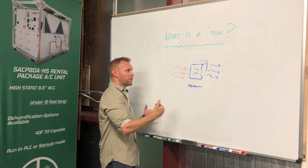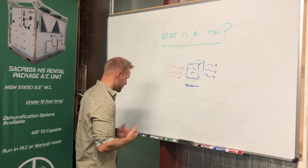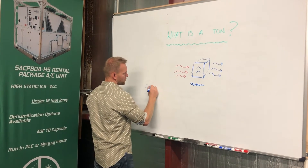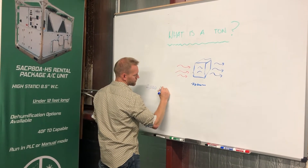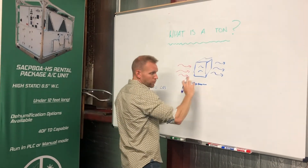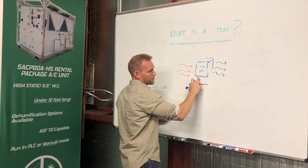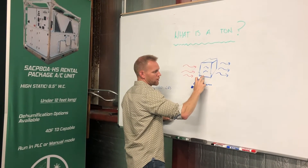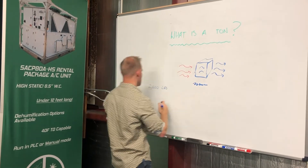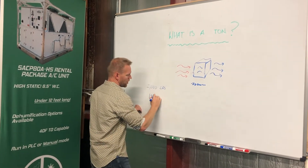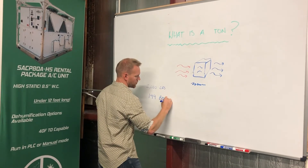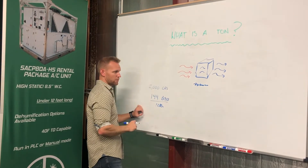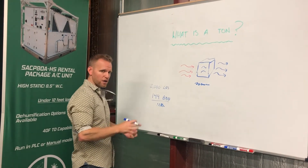Let's go a little bit more in depth and talk about what that means. We know that a ton is equal to 2,000 pounds. But we also know that the phase change — the energy required to phase change one pound of water from ice to its liquid state — is 144 British thermal units per one pound of water.